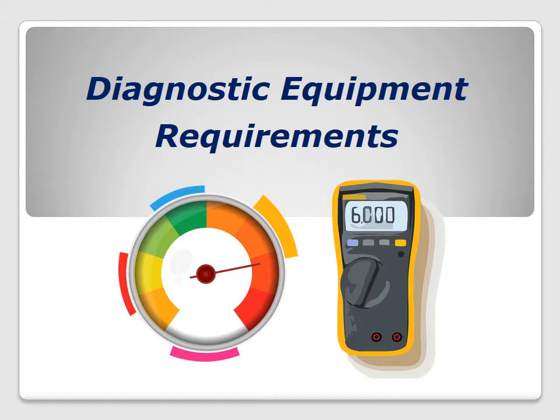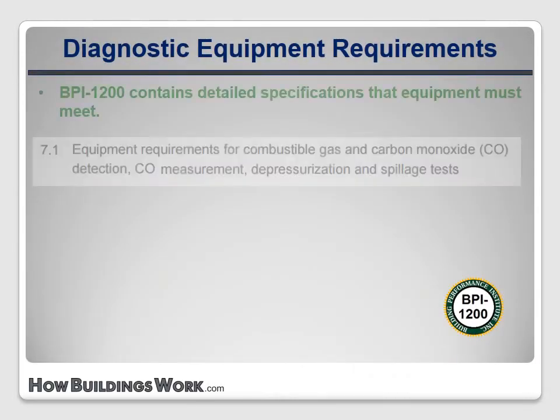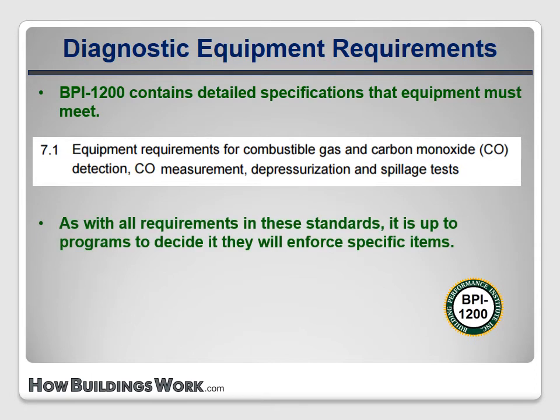One entirely new section provides detailed specifications that diagnostic equipment should meet. Section 7.1 of BPI 1200 details equipment requirements for combustible gas and carbon monoxide detection, carbon monoxide measurement, depressurization, and spillage tests. Of course, as is the case with all of the requirements contained in these standards, it's up to local programs to decide which specific line items they want to enforce with extra documentation and QA inspections.